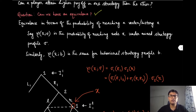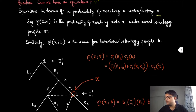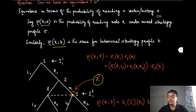We can ask questions like: can a player attain a higher payoff with one strategy type than the other? And the most important question is: for which kinds of games can we have equivalence, so that we don't need to think about whether it is a mixed or behavioral strategy and can use them interchangeably? To talk about equivalence, we first define it in terms of the probability of reaching a particular vertex or history x.